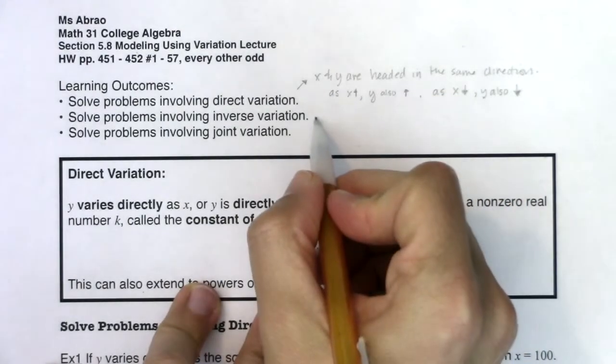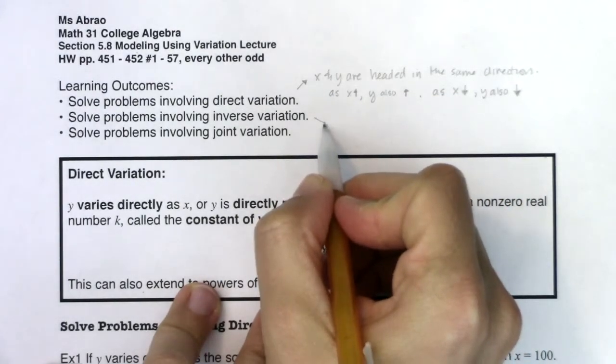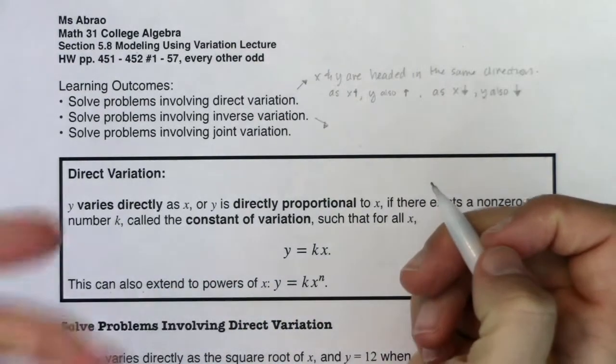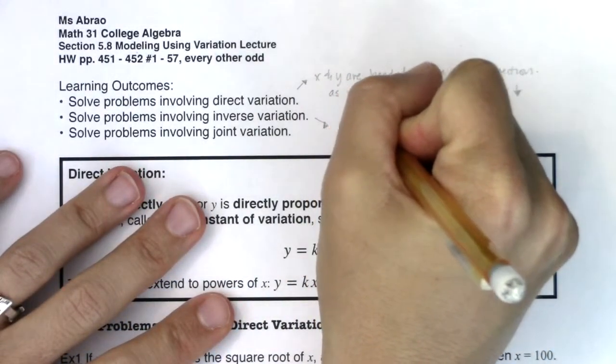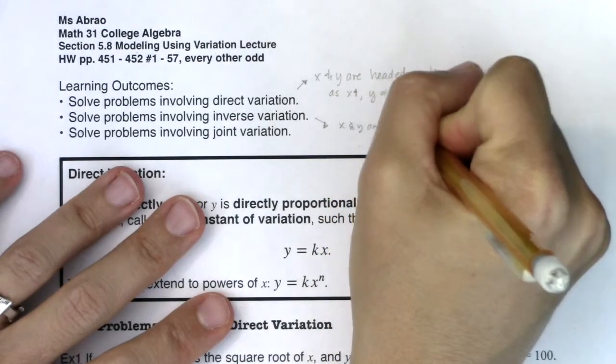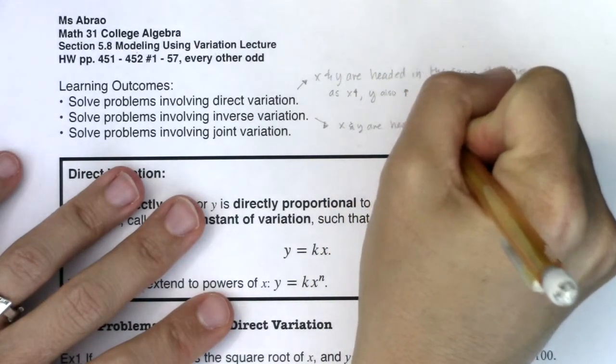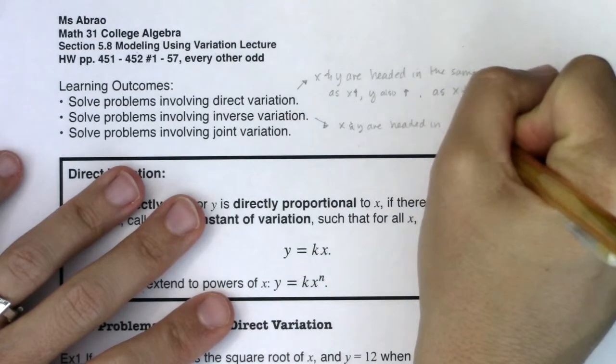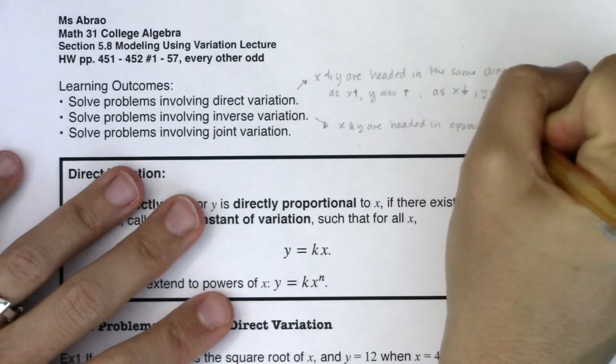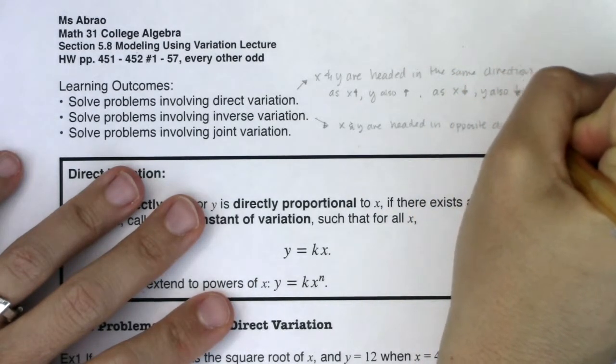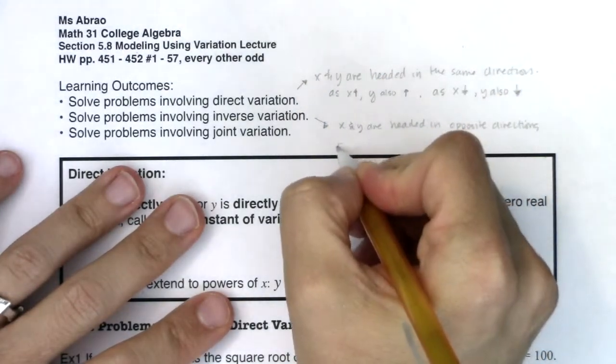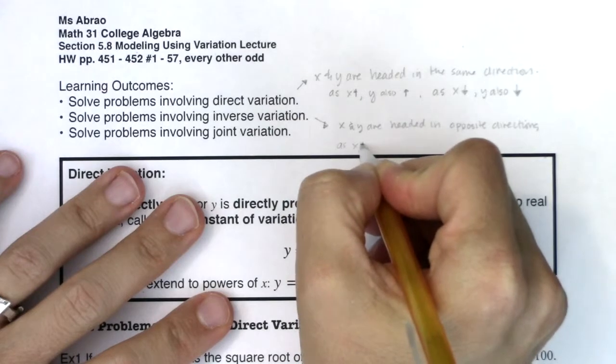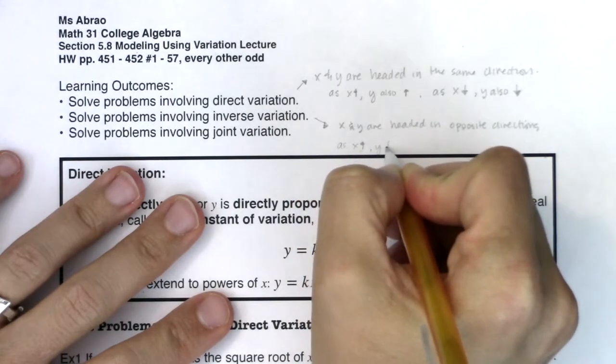And now in terms of inverse variation, x and y are headed in opposite directions. When I say that sentence, what I'm trying to convey is that as x goes up, this time y heads down.